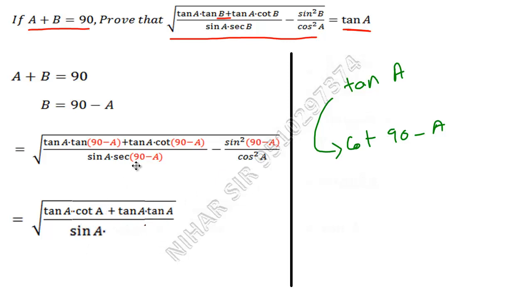So here tan A upon sine A. Instead of sec(90 minus A), it will be cosec A. Very simple, same way I explained. Same way it is converted.